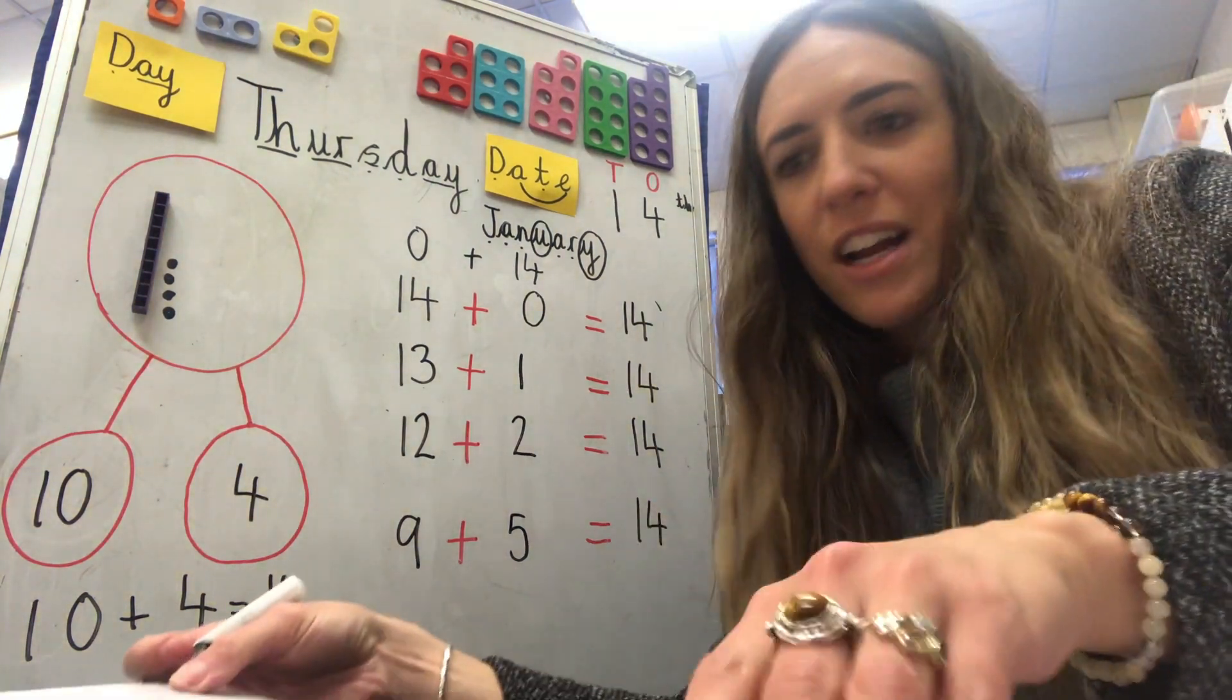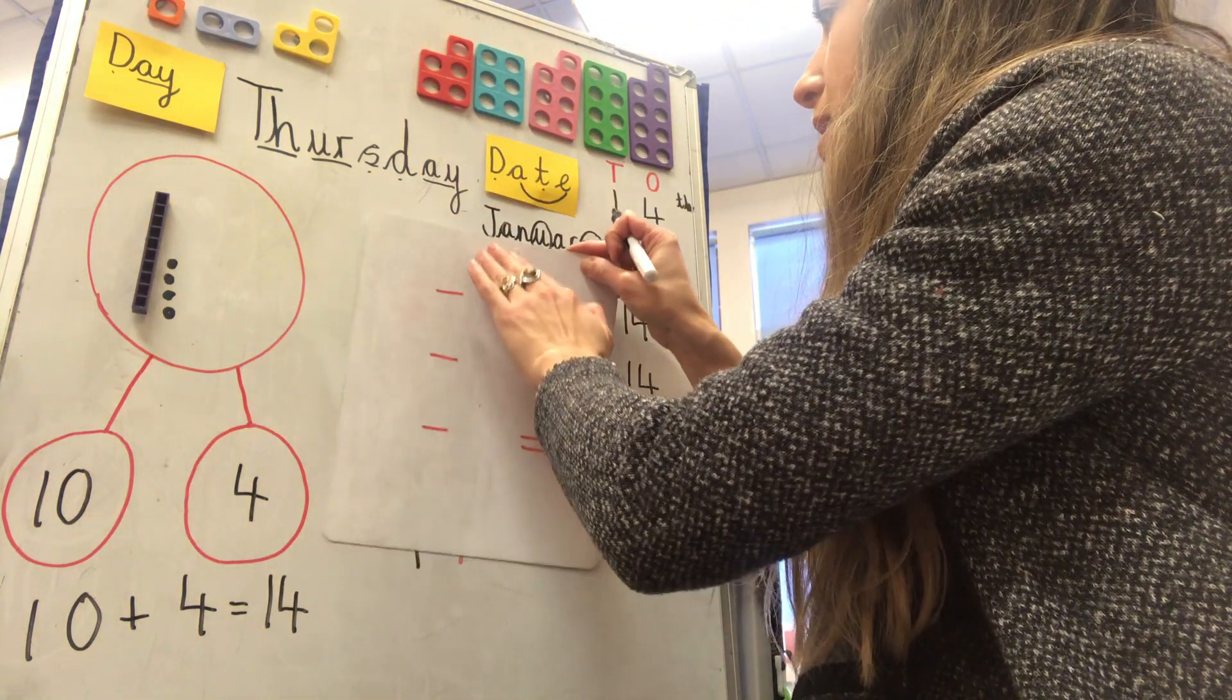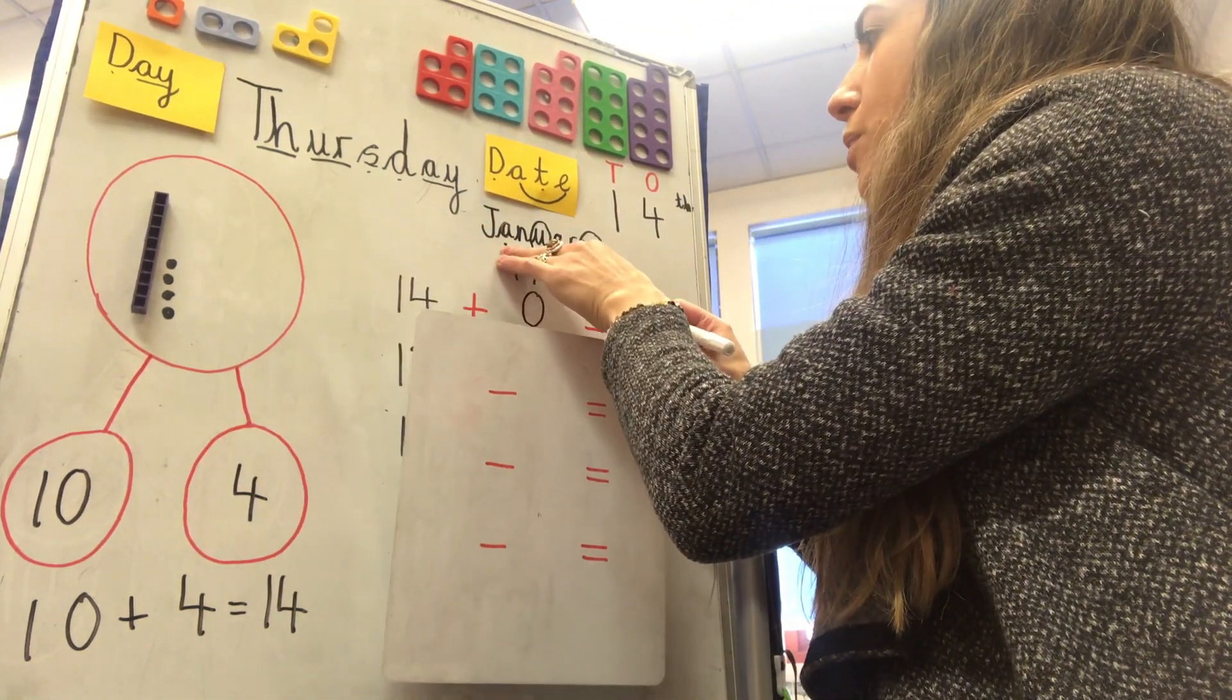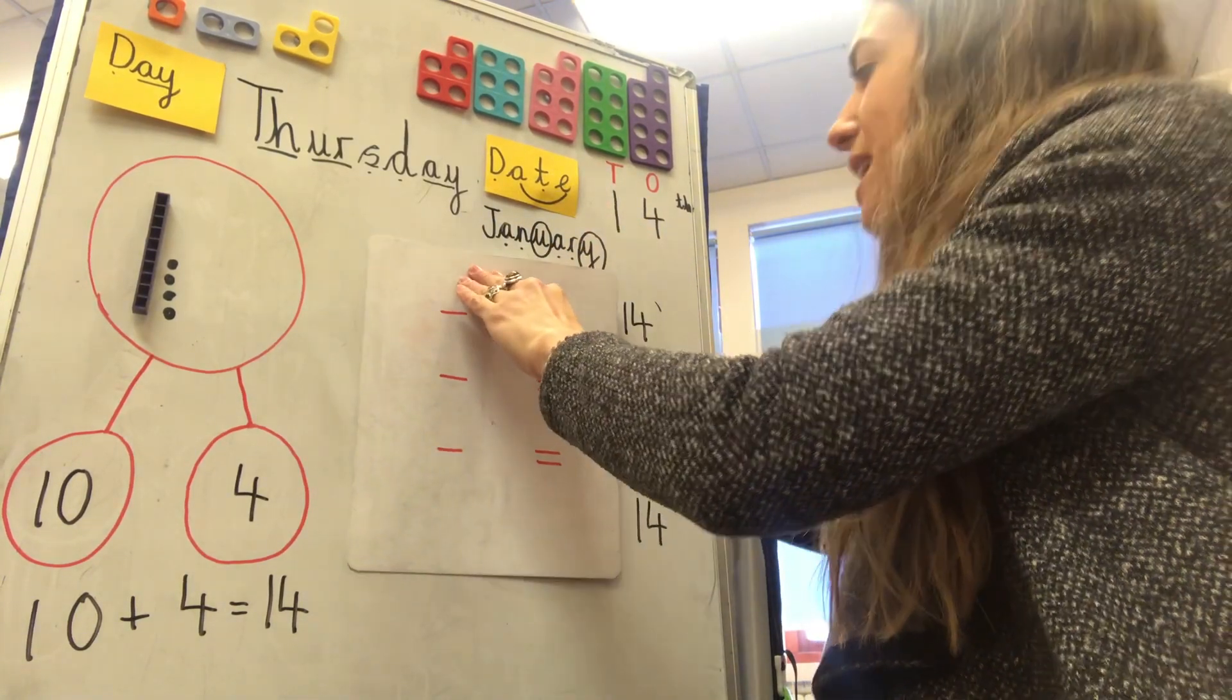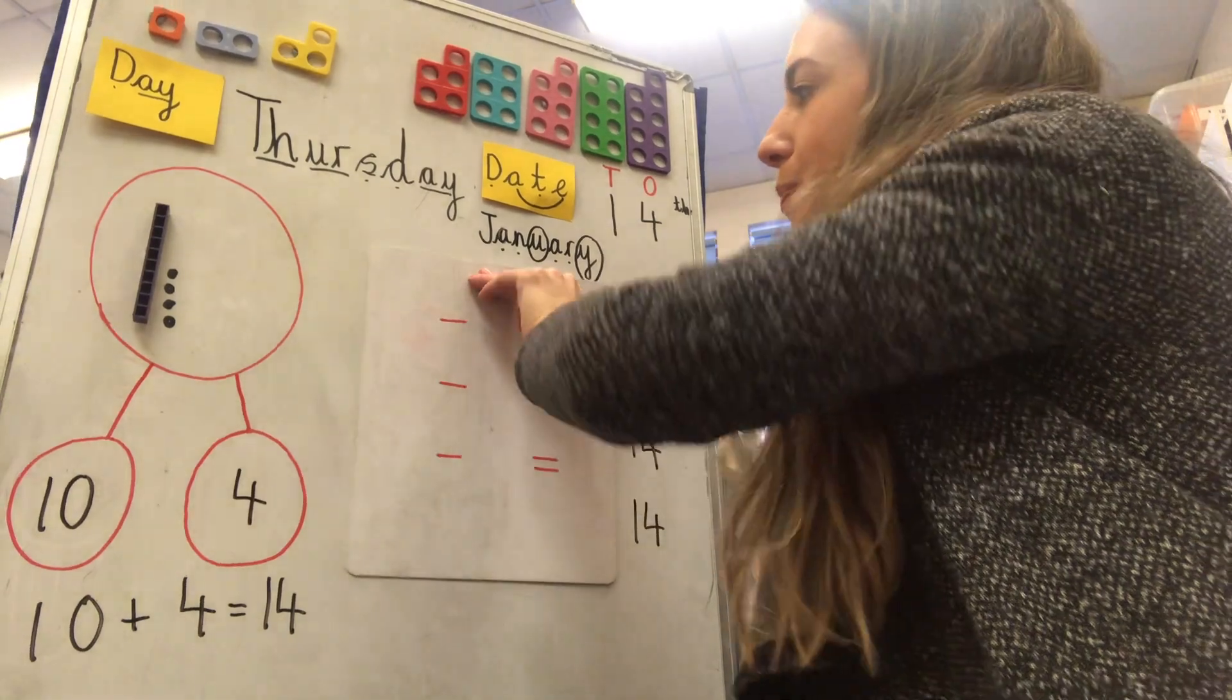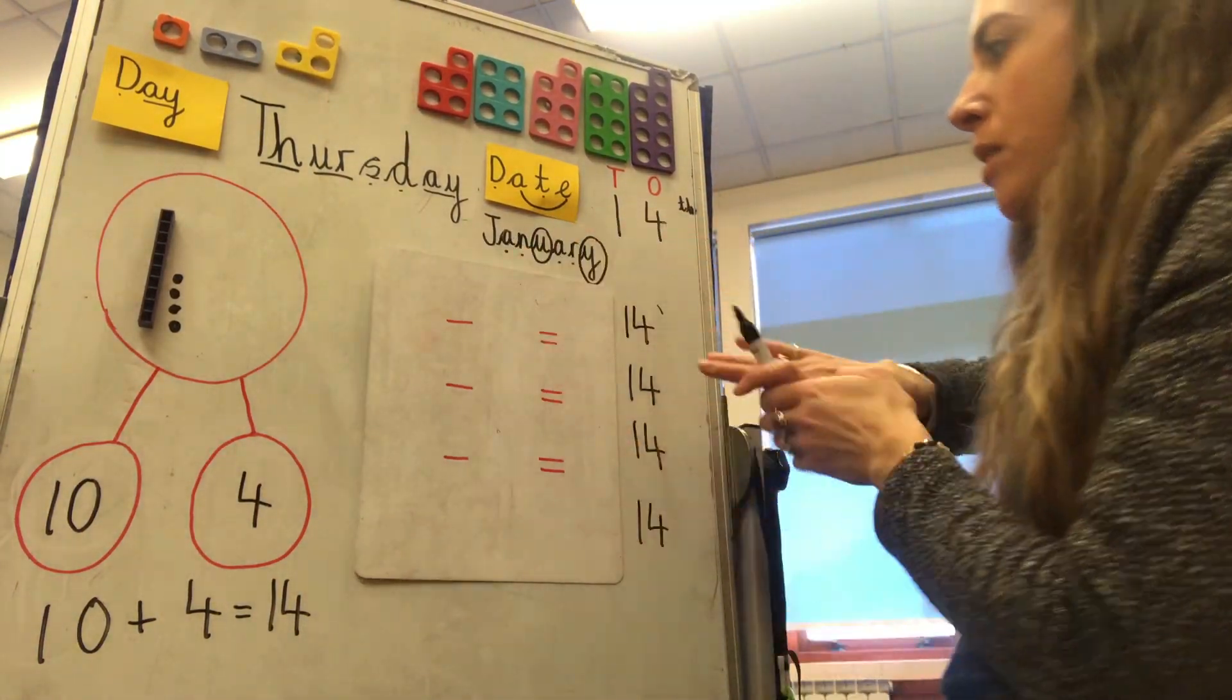Alright, let's do some subtraction. Some taking away number sentences. I'll rub that one out. Okay, so we're still making fourteen. Fourteen is our important number for today.